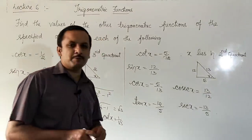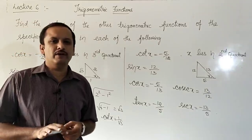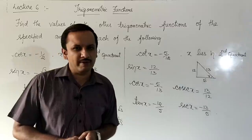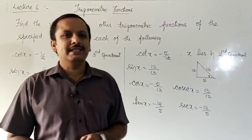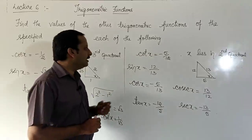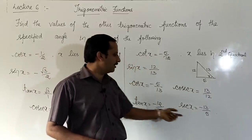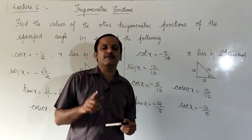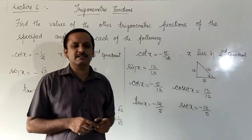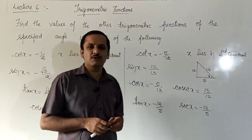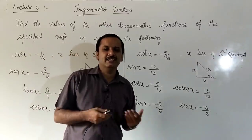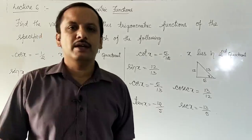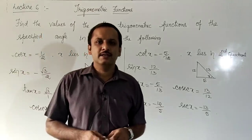Such problems are important — one trigonometric value is given and you find the other five. In the next class we will solve expressions like: given cot x = −5/12 with x in the second quadrant, find the value of (12 cos x + cot x) / (5 sin x − 4 tan x). With this I will end today's class. Thank you.